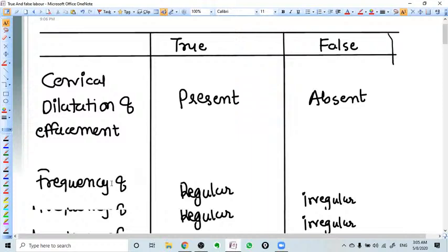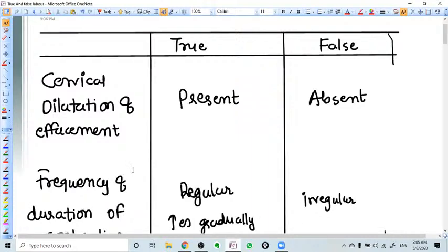It is very important to identify the difference. Let us see the difference. In true labour, the cervical dilation and effacement is present, while in false labour, it is absent.